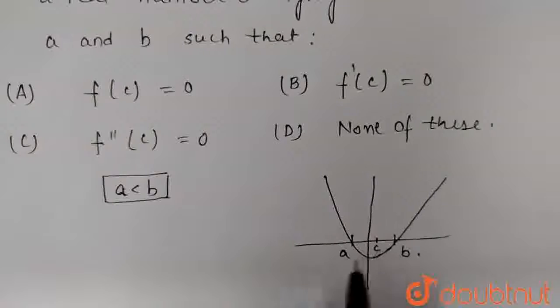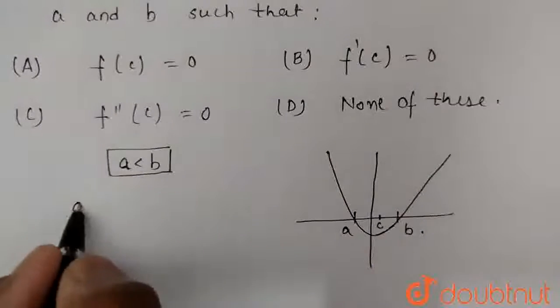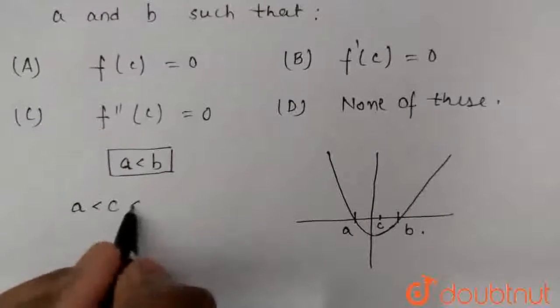Suppose any number C lying between A, B and C, A and B, so we get A is less than C is less than B.